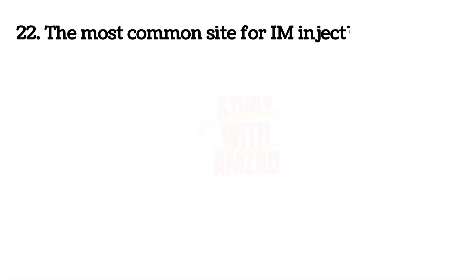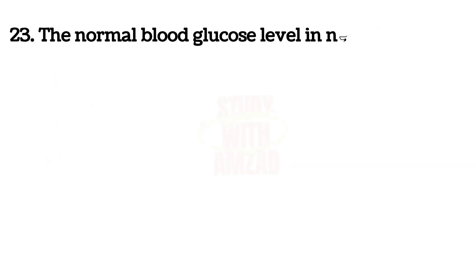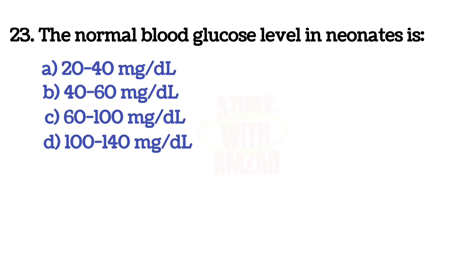Next question: The most common site for IM injection in infants is? The correct answer is C — vastus lateralis. Next question: The normal blood glucose level in neonates is? The correct answer is B — 40 to 60 mg per dL.